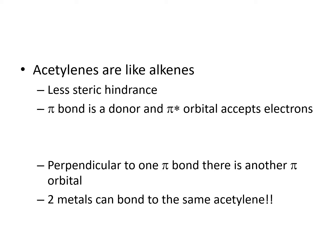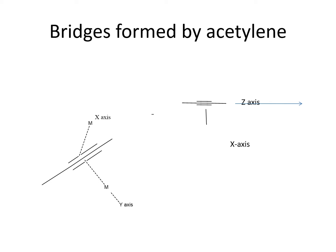Interestingly, the acetylene has two perpendicular pi bonds, allowing two metals to bind to the same acetylene simultaneously. One metal approaches along the x-axis and the other along the y-axis (taking the C≡C axis as z). This perpendicular arrangement is a key structural feature that distinguishes acetylene coordination from simple alkene coordination.